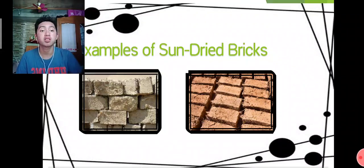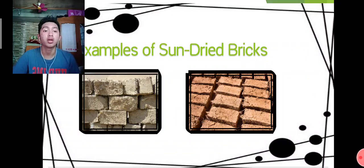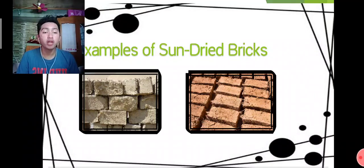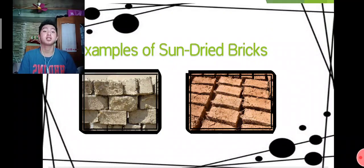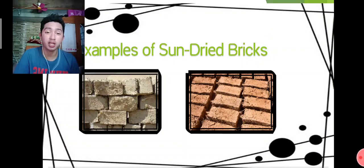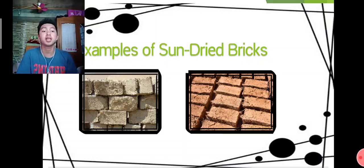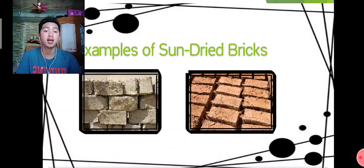These are examples of sun-dried bricks. They are made using box-form or wooden molds. From the term 'sun-dried bricks,' they are dried using the heat of the sun, which solidifies each brick.